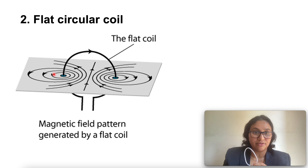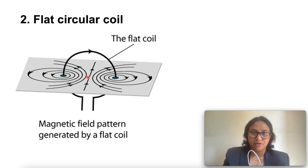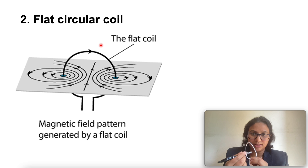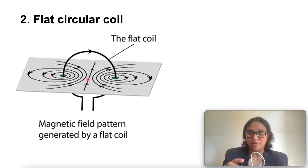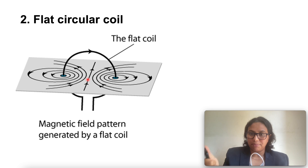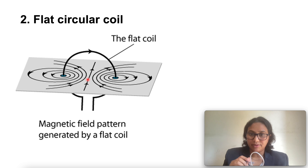As we move away from the wire, the concentric circles representing the magnetic field become larger and larger. By the time we reach the center of the circular loop, the arcs of the big circles appear as straight lines. Every point on the wire carrying current gives rise to a magnetic field appearing as straight lines at the center of the loop.